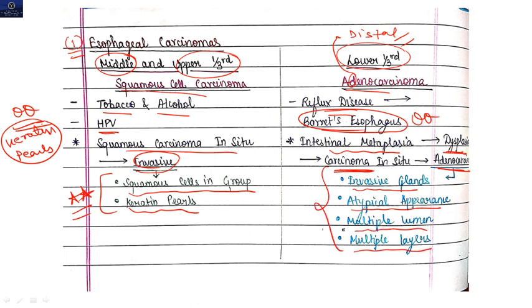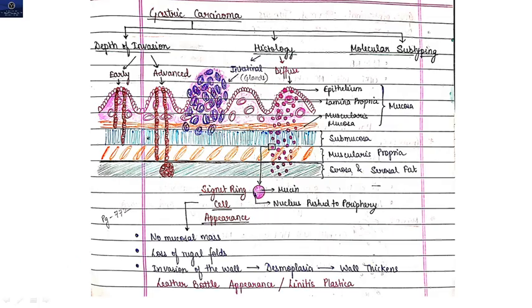Now moving to gastric carcinoma. Gastric carcinoma is basically divided on the basis of three things: first, on the basis of depth of invasion - early gastric carcinoma versus advanced gastric carcinoma. On the basis of histology - intestinal gastric carcinoma versus diffuse gastric carcinoma. And another one is on the basis of molecular subtyping.